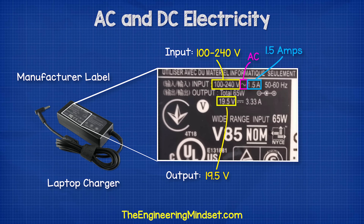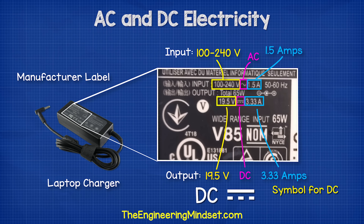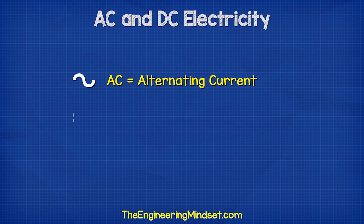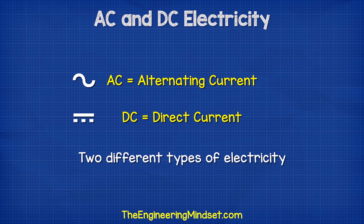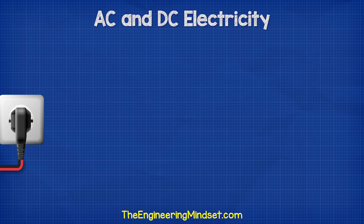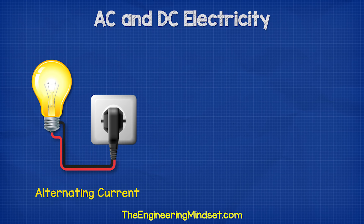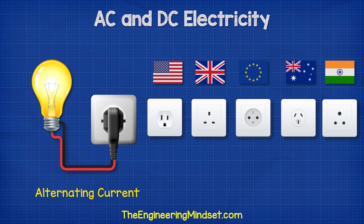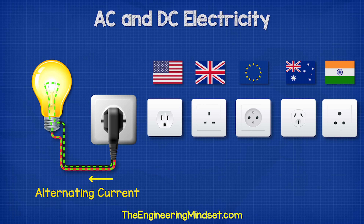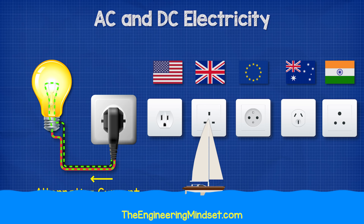The charger will then convert this to give an output of around 19.5 volts and 3.33 amps of DC, or direct current, which is represented by this symbol. AC and DC are different types of electricity. The plugs in your homes provide AC, or alternating current. In this type, the electrons do not flow in a continuous loop.